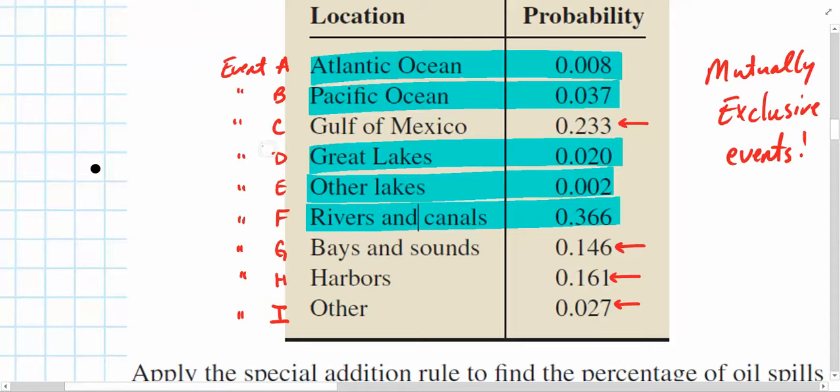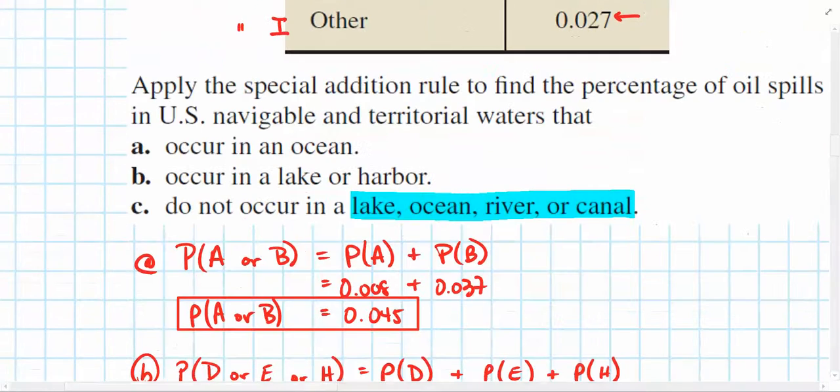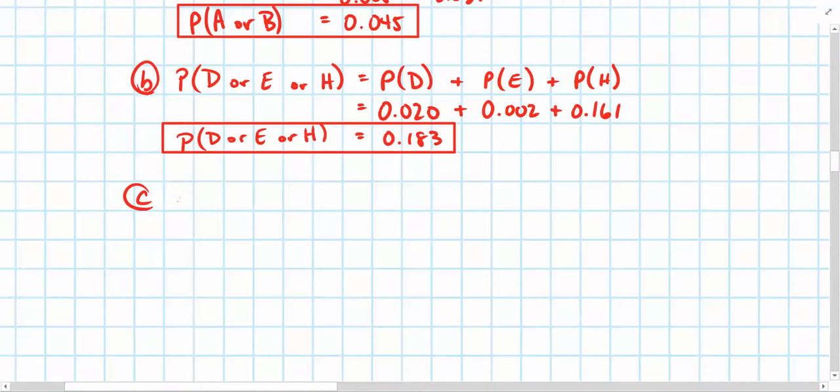So, we're now looking at C, G, H, and I. So, part C can be answered by finding the probability of C, or G, or H, or I occurring. And, again, since these are mutually exclusive events, we can sum together all of their probabilities.